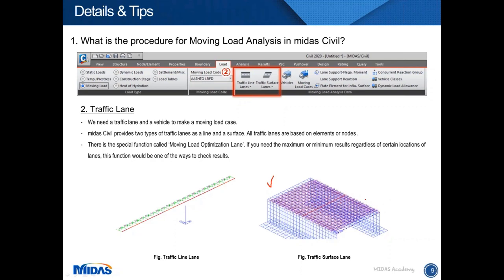The moving load optimization lane function is available in both traffic line lanes and traffic surface lanes. This function helps find the maximum or minimum results regardless of the specific location of lanes. It is one of the ways to check critical results regardless of the certain lane position for the design condition.